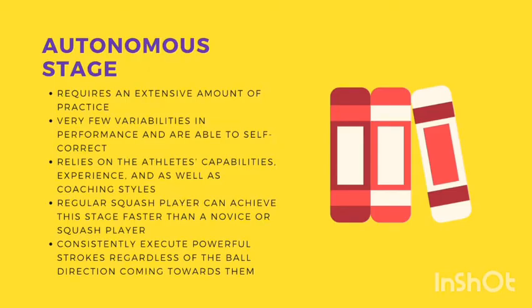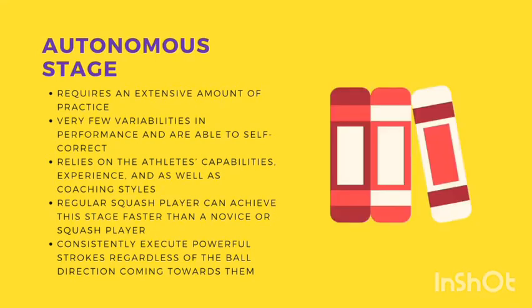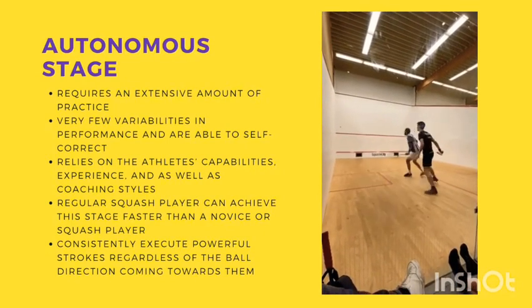The third stage is the autonomous stage. Achieving this stage requires an extensive amount of practice. When athletes are at this stage, they will have very few variabilities in performance and are able to self-correct themselves whenever an error is committed. To achieve this stage, it relies on the athlete's capabilities, experience, and coaching styles such as the instructions given, alongside the task variables and practice structure. A regular squash player can achieve this stage faster than a novice or immature squash player, and they can consistently execute powerful strokes regardless of the ball direction coming towards them.